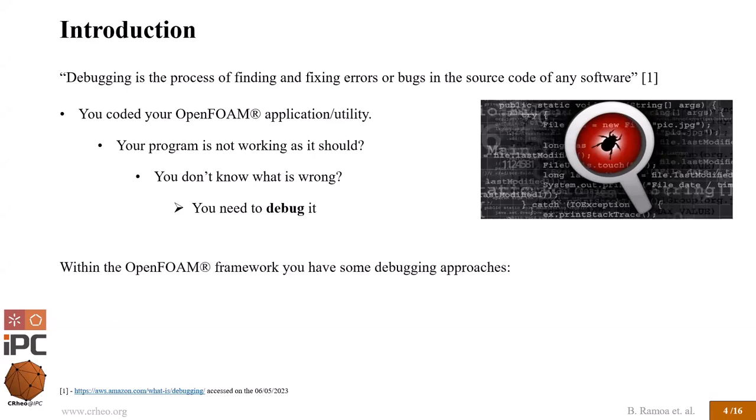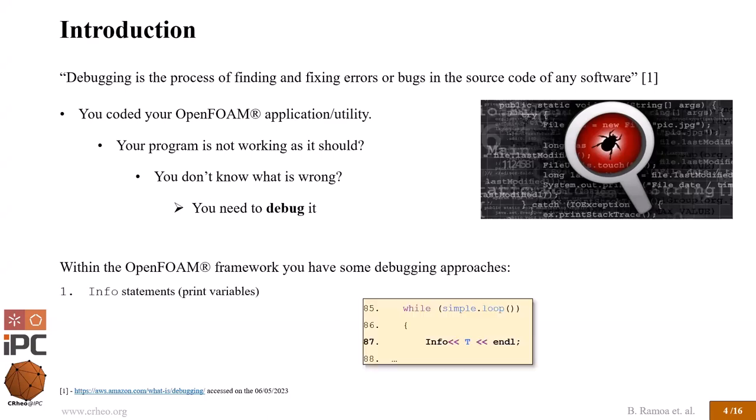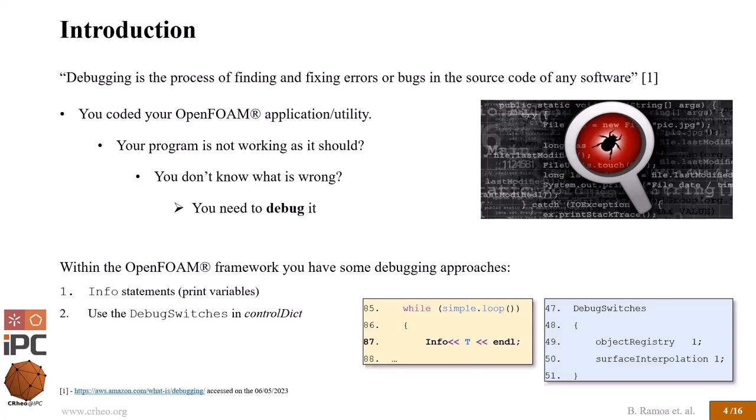Within OpenFOAM you have a couple of approaches for debugging. The most common is to use info statements — you edit your original code, put in some print statements, and check if the output is what you want. You also have global debug switches you can activate in your controlDict. If you're lucky the class you want to debug has some hard-coded debug information. If not, you'll have to use the debugger — for my applications I usually use GDB.